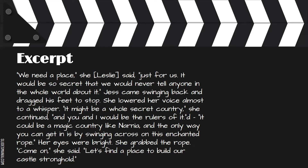"We need a place," Leslie said, "just for us. It would be so secret that we would never tell anyone in the whole world about it." Jess came swinging back and dragged his feet to stop. She lowered her voice almost to a whisper. "It might be a whole secret country," she continued, "and you and I would be the rulers of it. It could be a magic country like Narnia, and the only way you can get in is by swinging across this enchanted rope." Her eyes were bright. She grabbed the rope. "Come on," she said. "Let's find a place to build our castle stronghold."